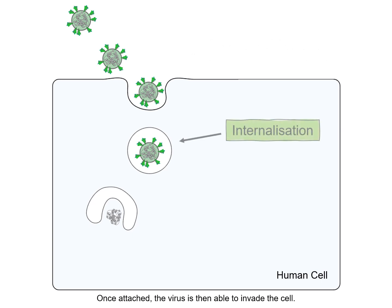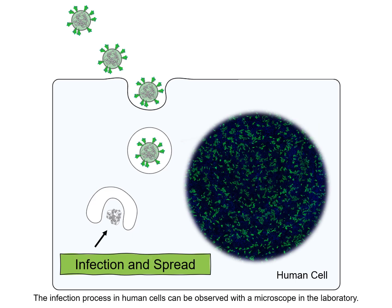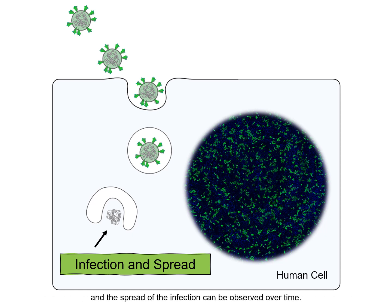Once attached, the virus is then able to invade the cell. Inside the cell, its genetic material is released and the virus begins to replicate. The infection process in human cells can be observed with a microscope in the laboratory. In this image, infected cells are labeled in green and the spread of the infection can be observed over time.